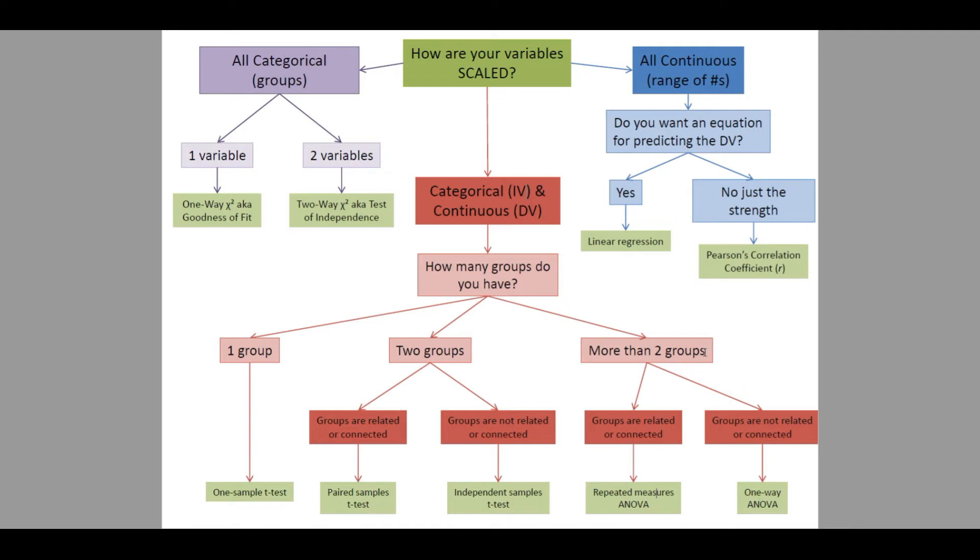If we have the case where we want to compare more than two groups, then we're going to be using an ANOVA, an analysis of variance. If those groups are not related or connected, we use a one-way ANOVA, which we went over in depth in this class. If those groups are related or connected, then we would use a repeated measures ANOVA.